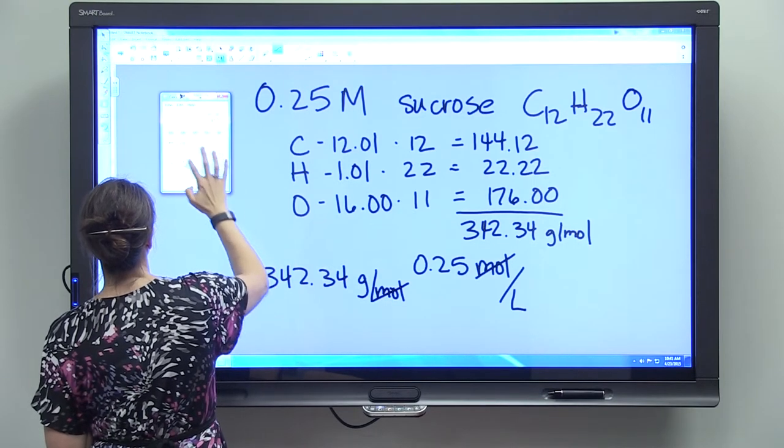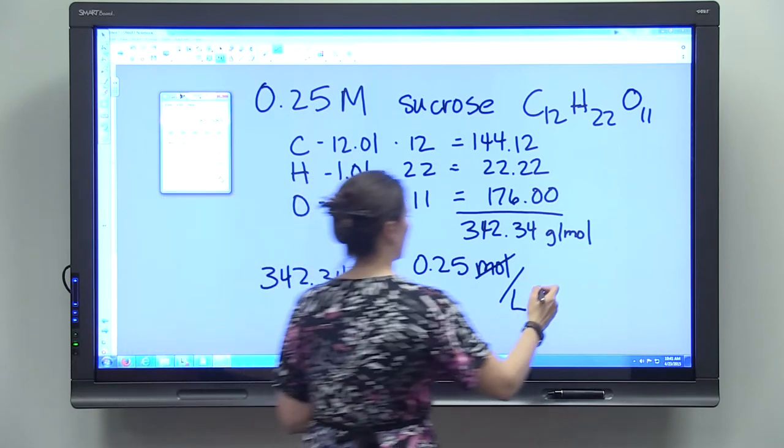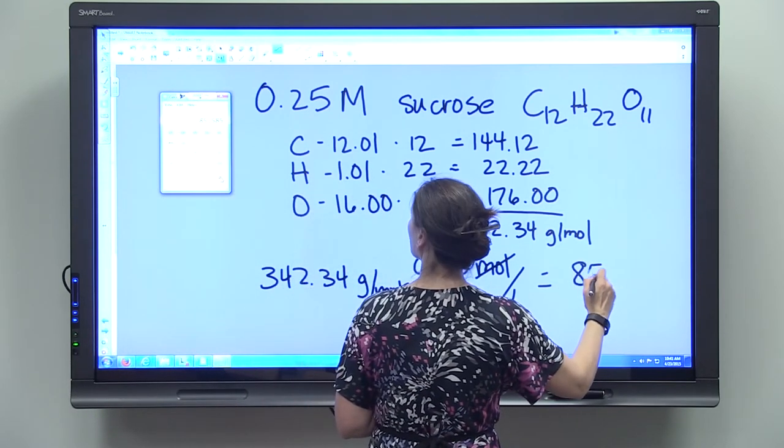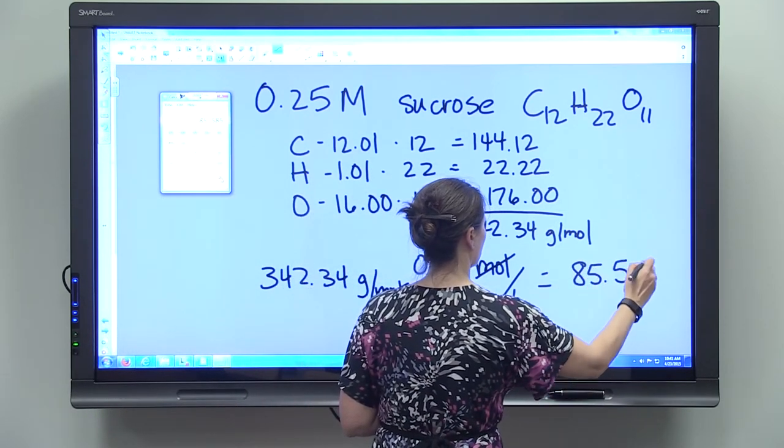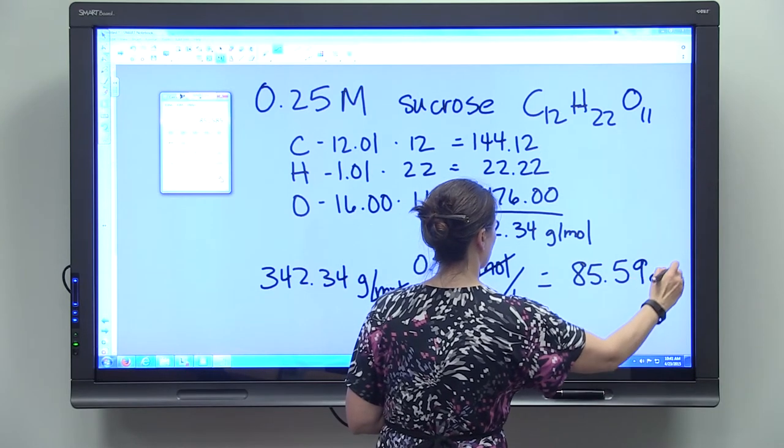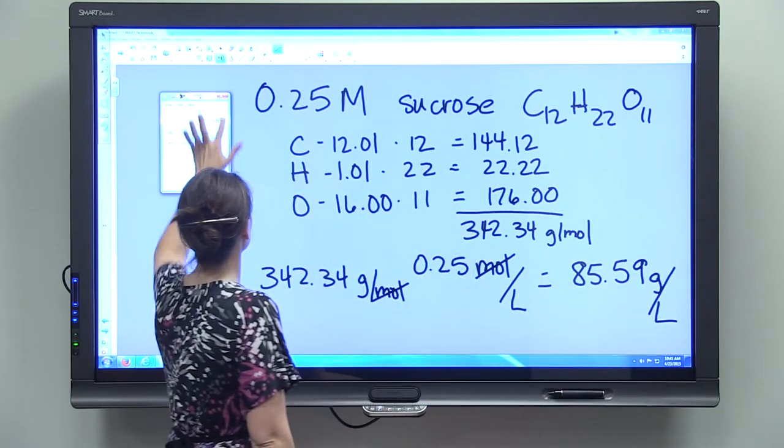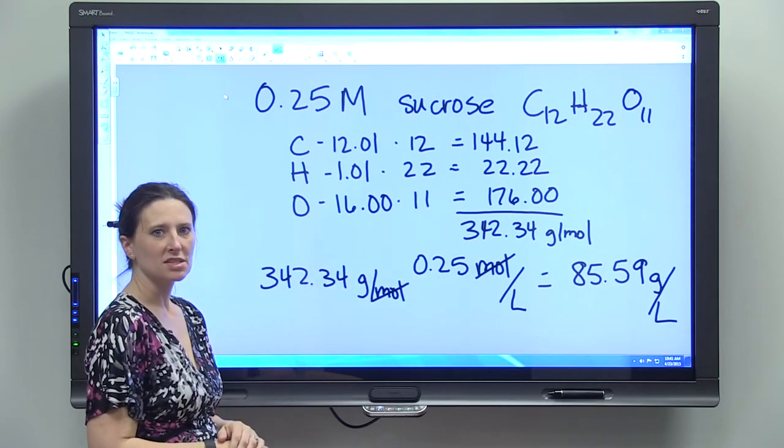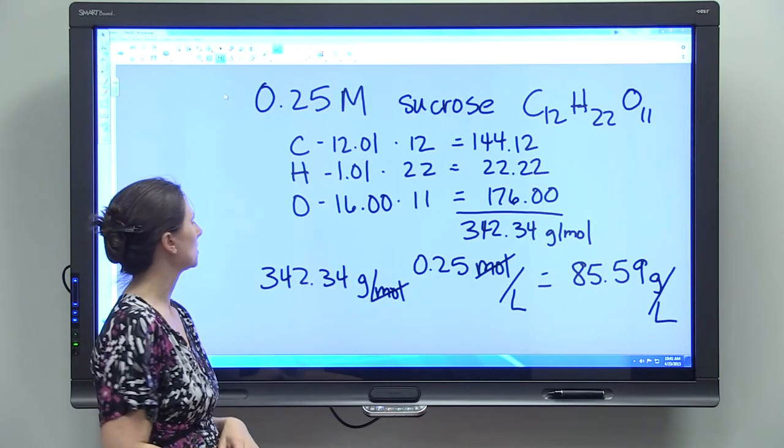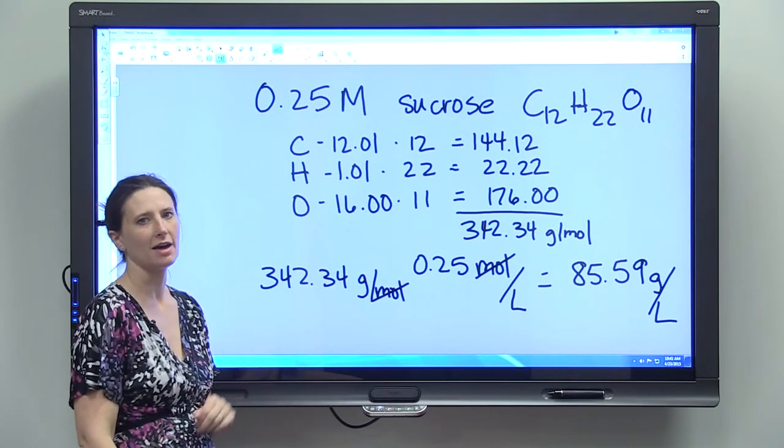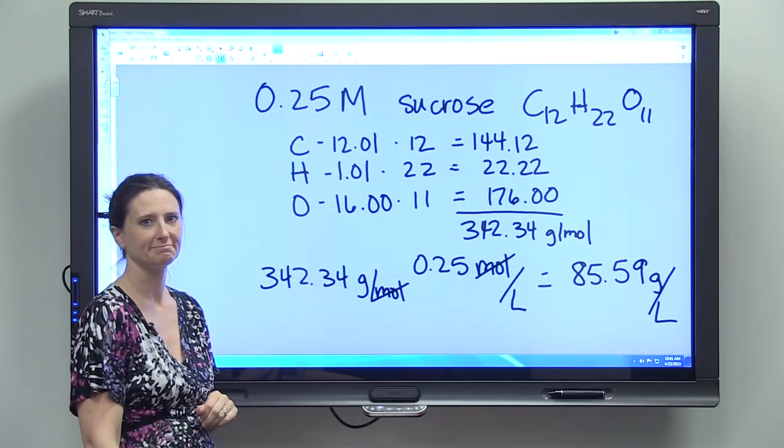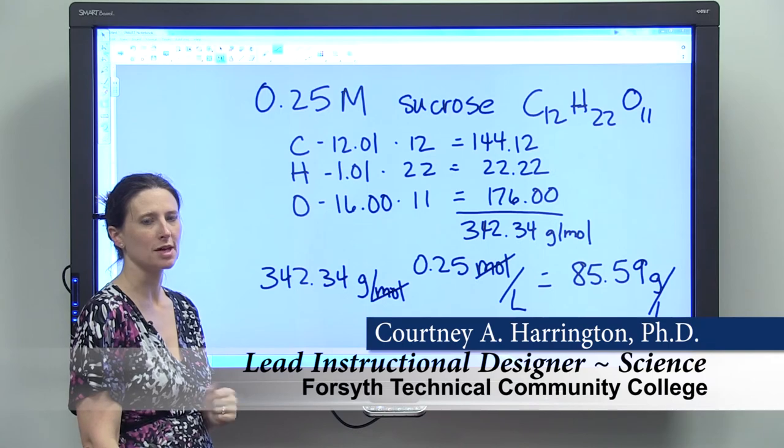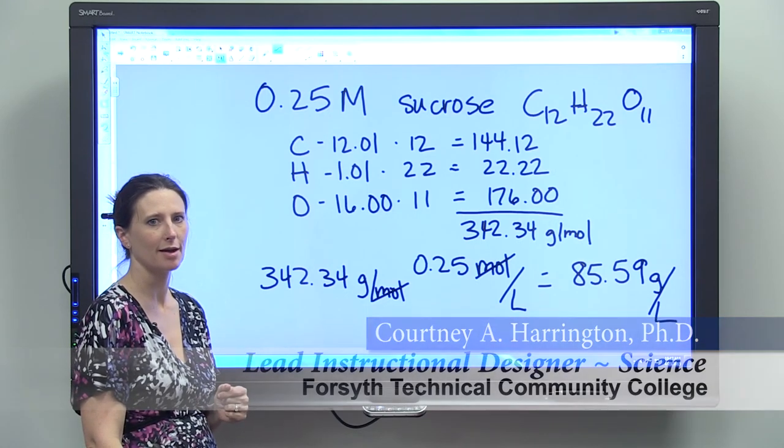0.25. And that gives us 85.59 grams per liter. So you would need 85.59 grams of sucrose in one liter of solution to have a 0.25 molar sucrose solution. So I hope these examples help you understand how you'll calculate molarity in the lab.